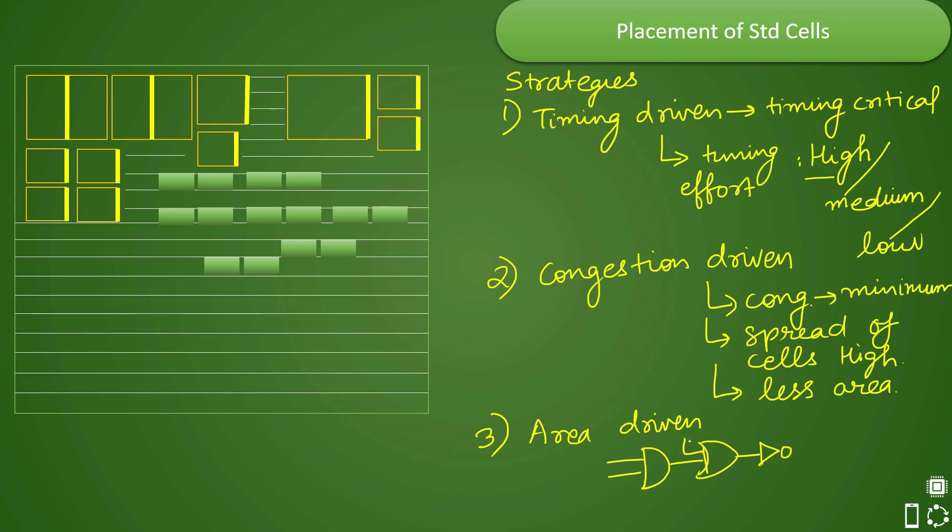So such combination can be there, and in order to optimize this type of combination, instead of using these three cells, you have an AOI cell available. And an AOI cell is nothing but your AND-OR-Invert.